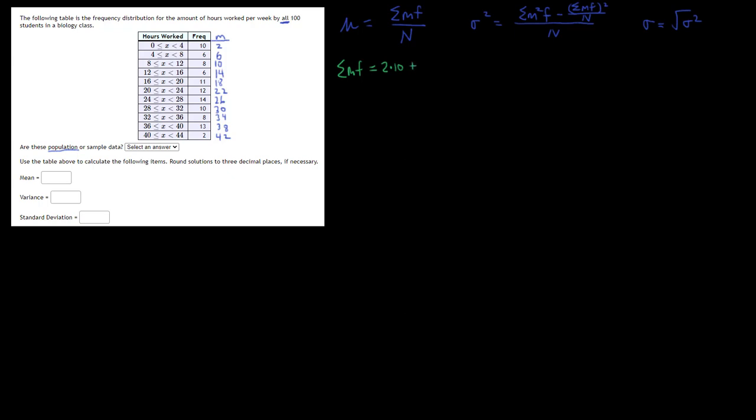So 2 times 10 plus, of course sum means to add. So you're going to add up every pair of M times F. So then you have 6 times 6 is the next M times F. Then we have 10 times 8, and so forth. And you're going to work your way down the list.